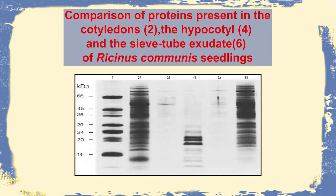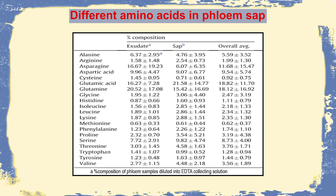When we consider the phloem protein pattern, the molecular weight of protein in the sieve tube exudate is around 20 to 24 kDa. In general, the phloem protein is lesser than in the hypocotyl or the overall seedling. Considering amino acids, all 20 amino acids are present, but some are higher in amount, including glutamine or glutamic acid, followed by asparagine. Others like aspartic acid or serine are relatively moderate.